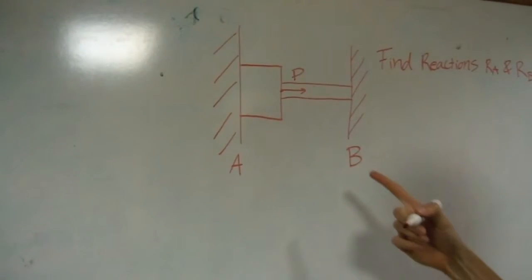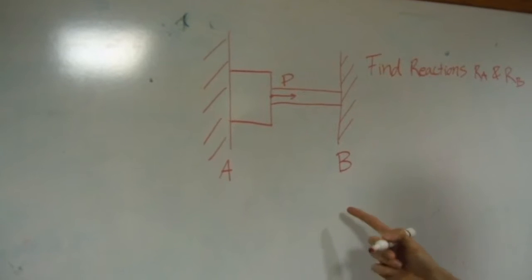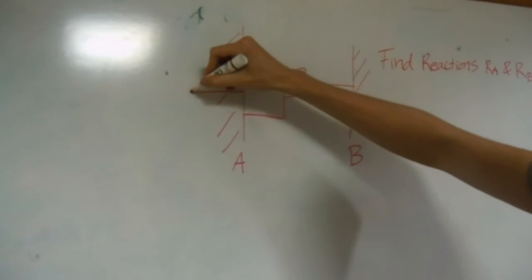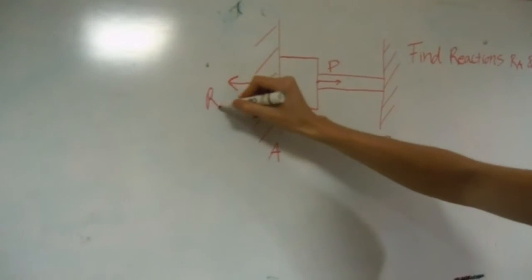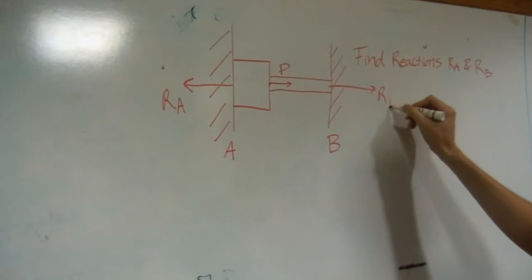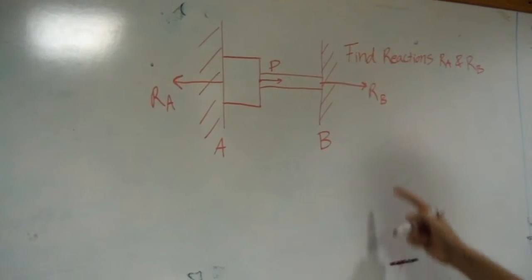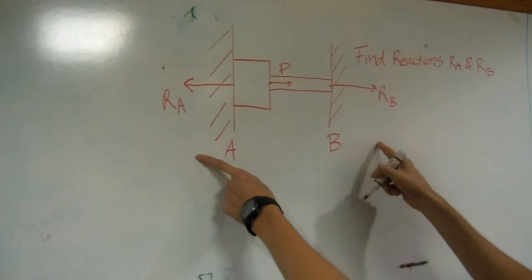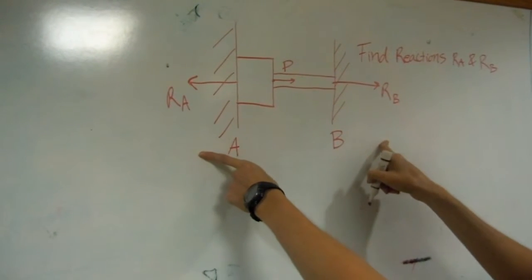Alright, so the first step would be to identify the reactions. So we have Ra, Rb. These are assumed to be in tension, so the force displacement equations are going to be positive.